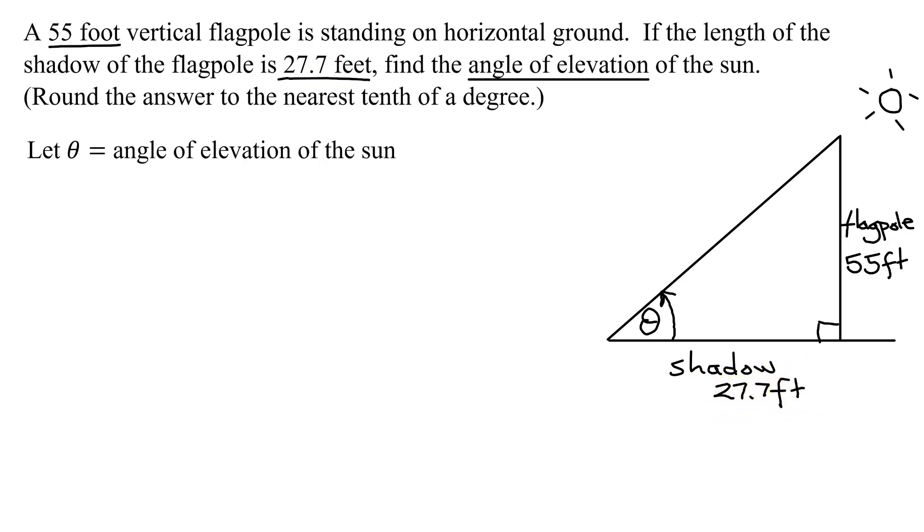So now I need to look at the angle I'm trying to find and the two distances I'm given. 55 feet is the side that is opposite the angle I'm looking for, and the 27.7 feet is the side that is adjacent to it.